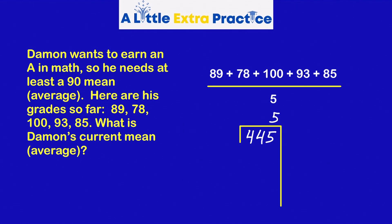Using the partial product method, I'm looking at what times five is going to be close to 440. Thinking of my multiplication facts, five times eight is 40, so five times 80 would be 400. Subtract. Five times nine is 45. And right now his current average is 89.